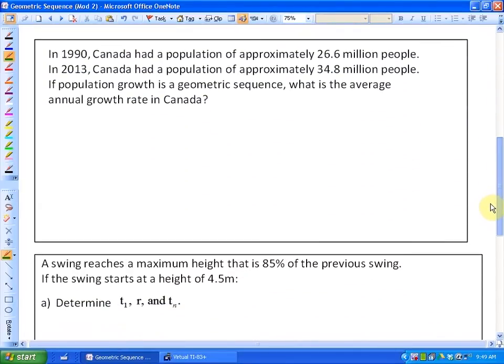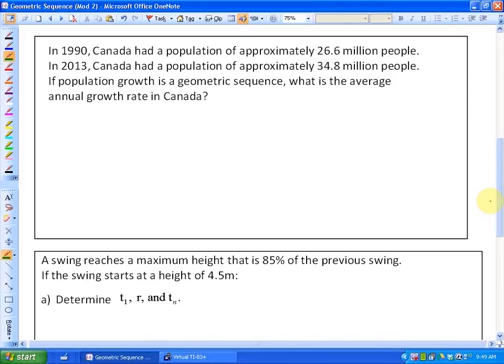We're going to do two problems here. This first problem says that in 1990, Canada had a population of approximately 26.6 million people, and I'm going to call that term 1. In 2013, Canada had a population of approximately 34.8 million people. The question states, if the population growth is a geometric sequence, what is the average annual growth rate in Canada?